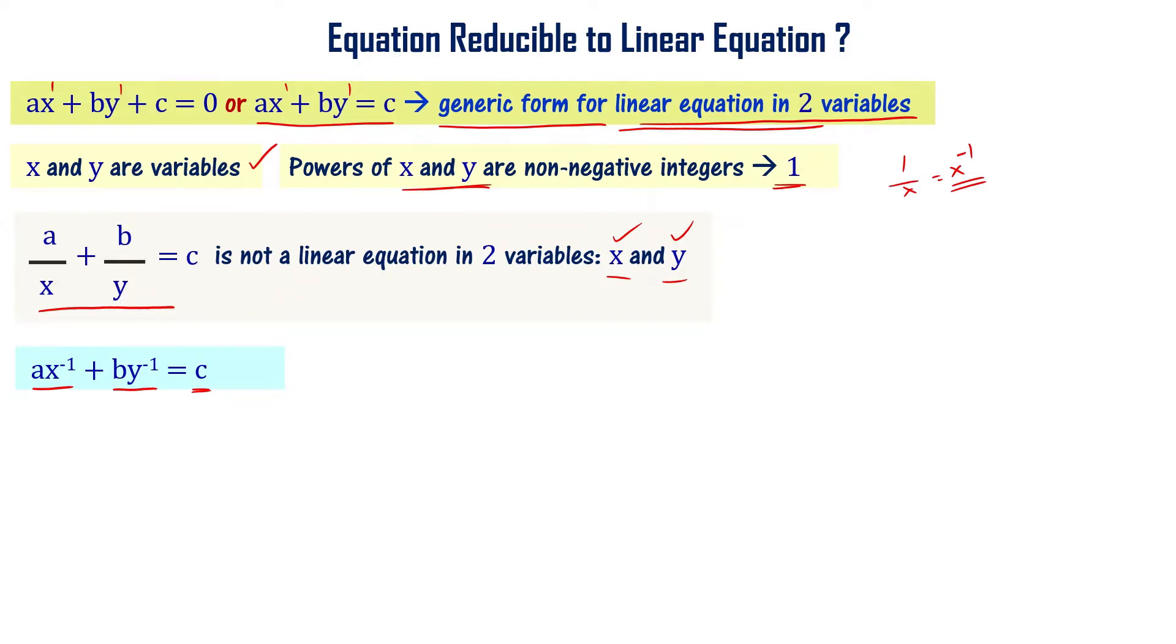A x power minus 1 plus b y power minus 1 is equal to c. This equation has two variables, but the powers are negative integers. Powers of x and y are negative integers. So, the degree of this particular equation is minus 1. Such equations are non-linear equations, meaning they are not linear equations. These equations, a class of equations, can be converted to linear equations.